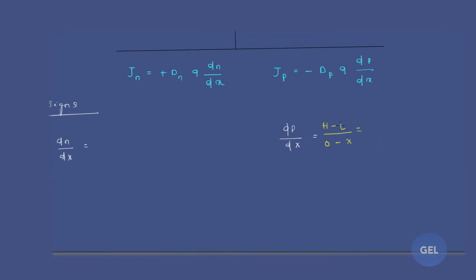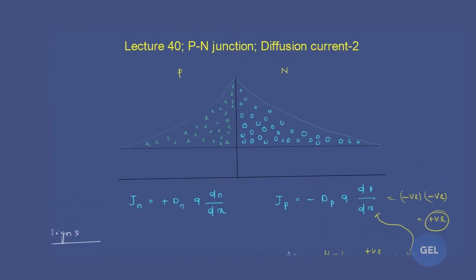High minus low will be positive, and 0 minus x will be negative, so the overall dp/dx result will be negative. Now if you put this negative value in the expression, there is a negative term already present, so overall the value will come out positive. That means the direction of IH will be in the positive direction — that is, the right direction.